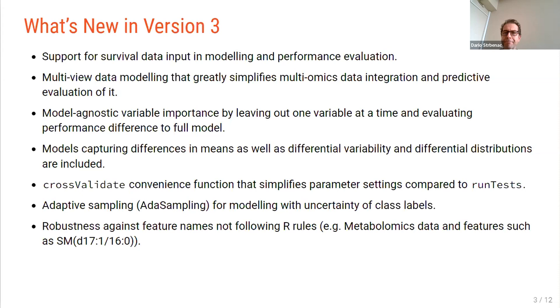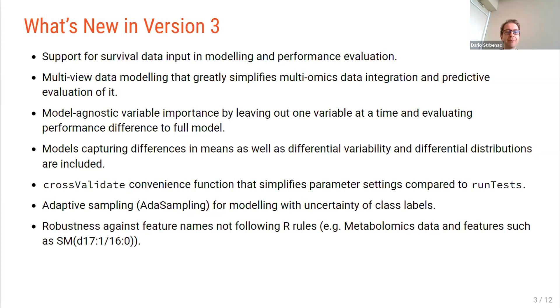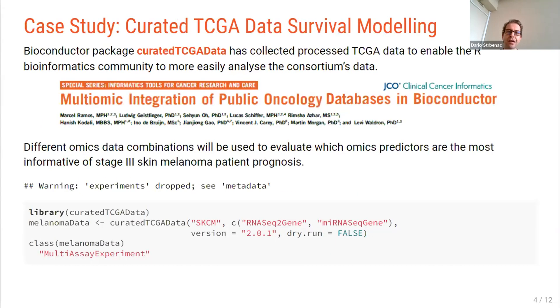We've built in robustness against feature names that don't follow R's rules. So once you get away from the gene expression sort of fields to more exotic data types like metabolomics, you find that there's a lot of slashes, colons, brackets and asterisks in the feature names. And many of the parameters for the functions that we provide now have a value of auto for the parameter. So that will mean I don't want to think about this function too much. Just pick a reasonable value of the parameter for me, please.